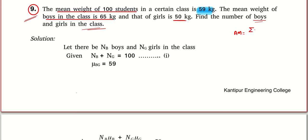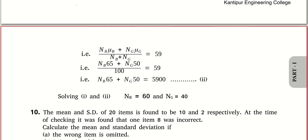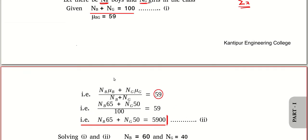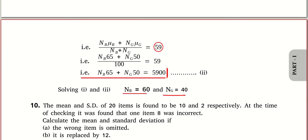The arithmetic mean formula is: sum of all data items divided by n. Cross-multiplying gives you the sum of all data items. Let the number of boys be nb and number of girls be ng, so nb + ng = 100. The combined mean is given as 59. Plugging in all those values gives a second equation. Use a calculator to solve the two equations — the university has allowed a calculator, so use it.